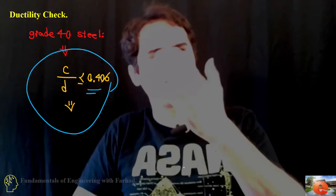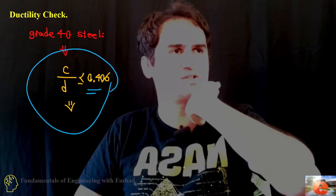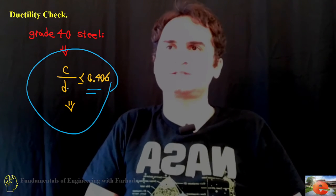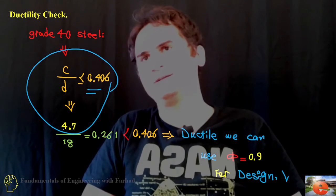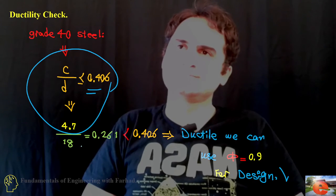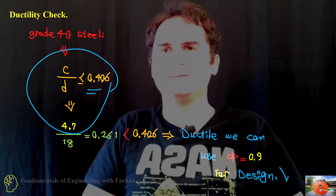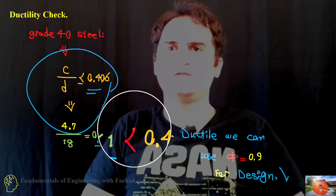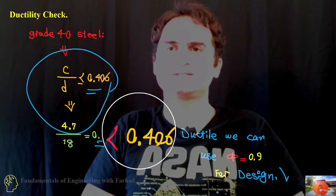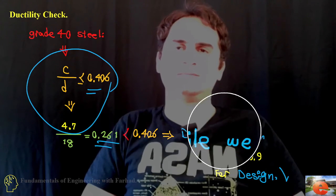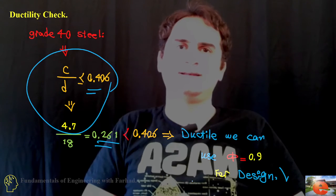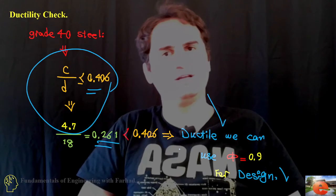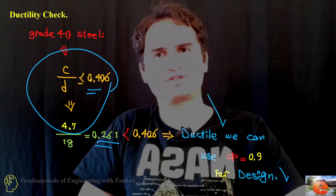c over d should be less than 0.406. This relation comes from similar triangles calculation. It gives us c, which is 4.7, over 18, the effective depth. That's 0.261, which is definitely less than 0.406.